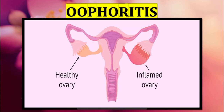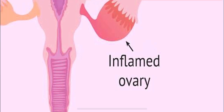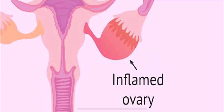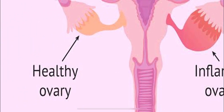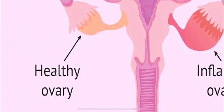Welcome back. In today's video, we are going to study about oophoritis. The term is split into two: 'oophor' means the ovaries and 'itis' is the inflammation. You can see the inflammation of ovaries in this picture and the healthy ovary on the other side.